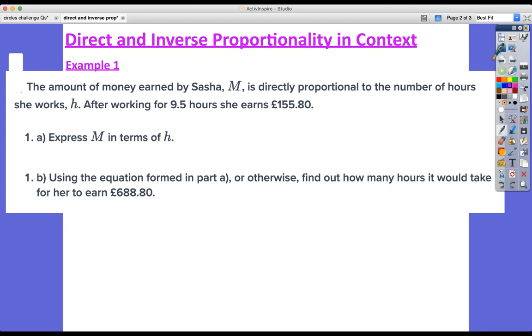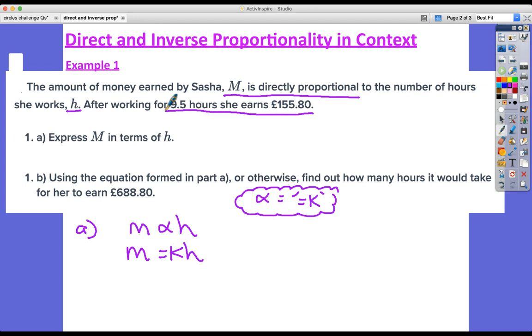Express M in terms of h. So let's do our usual thing. The first thing we're going to write down is that M is directly proportional to h. There are two variables, so part a: M directly proportional to h. Now we've learned that we replace the proportionality sign by equals k. So we actually produce instead of having that proportionality sign, we produce an equation. Now we know a pair of values that work within this equation given some value k, this constant of proportionality.